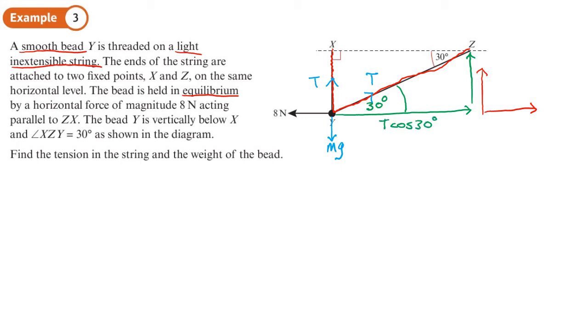Meaning that this side here at the bottom is going to be T cos 30. And at the side, it will be T sin 30, which was playing T sin 30. So we're now able to look at our forces.